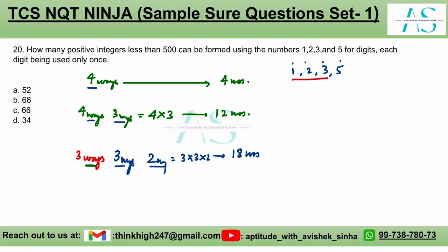These are three different cases. So cases are always added up at the end. So 18 plus 12 plus 4 is 34 numbers in total are possible, which are less than 500 using the set of options 1, 2, 3 and 5. 34, option D seems to be the correct fit here.